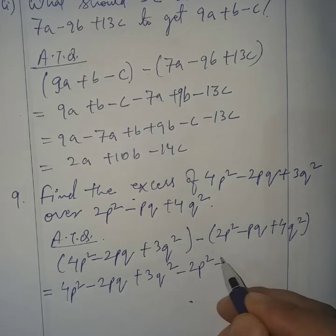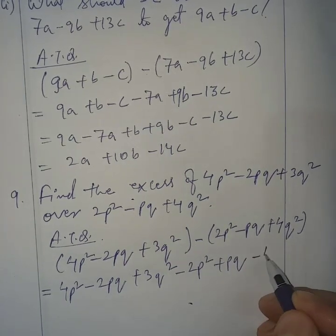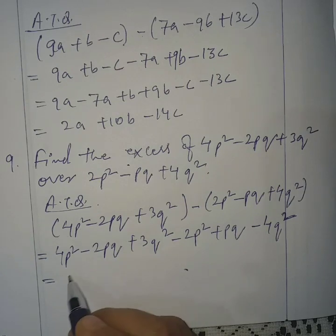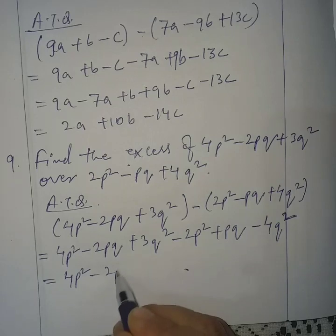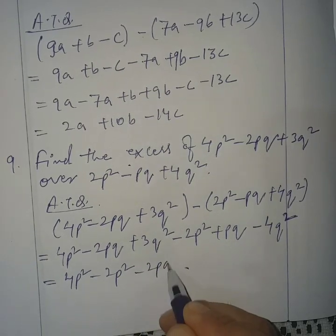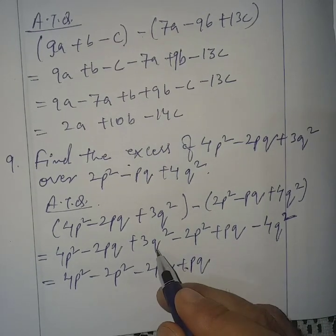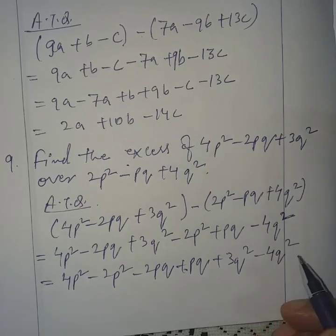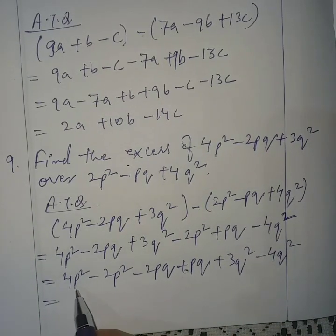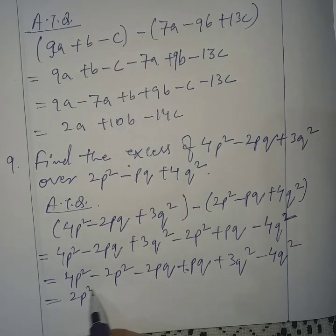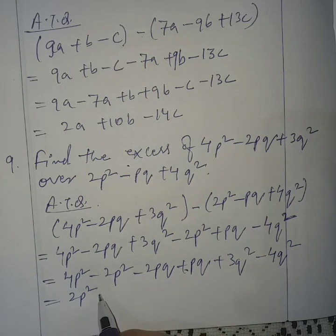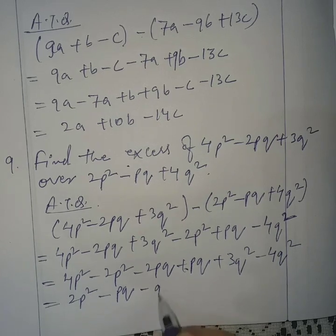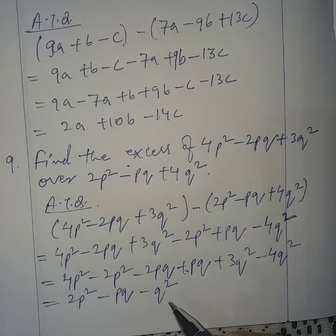Opening the bracket: 4P squared minus 2PQ plus 3Q squared, minus into plus is minus 2P squared, minus into minus is plus PQ, and minus into plus is minus 4Q squared. Like terms: 4P squared minus 2P squared is 2P squared, minus 2PQ plus PQ is minus PQ, and 3Q squared minus 4Q squared is minus Q squared.